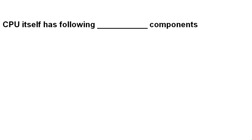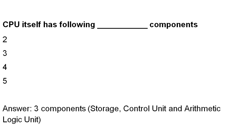CPU itself has how many components — 2, 3, 4, or 5? CPU itself has 3 components. It consists of Storage, Control Unit, and Arithmetic Logic Unit.